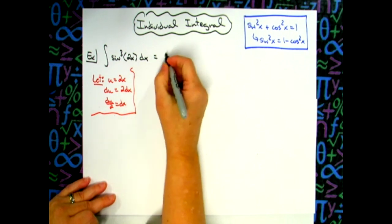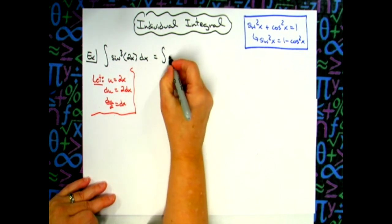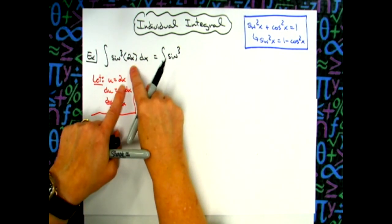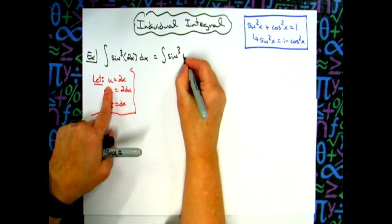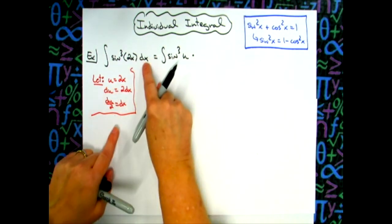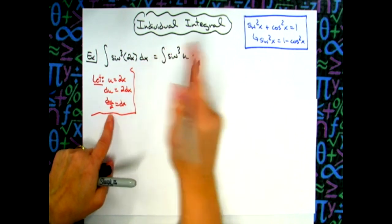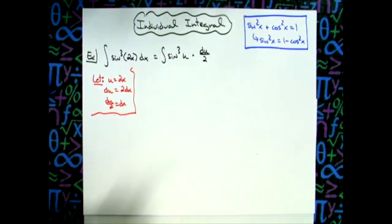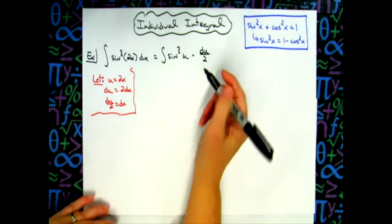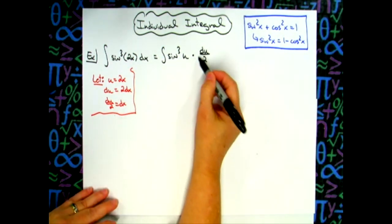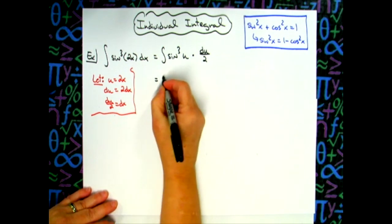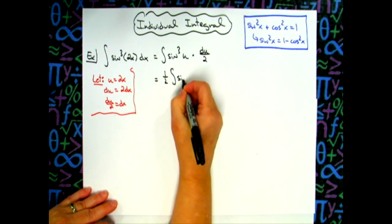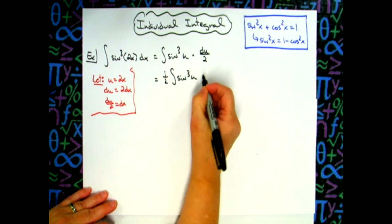So we'll have the integral of sine to the third power. We want to substitute the 2x with a u. We want to substitute dx for what it equals, du over 2. Now I'm all in terms of u. And so I'm just going to clean this up a little bit. We've got a one half right here that we can pull out. So we'll have one half the integral of sine u to the third power du.